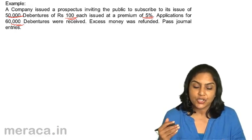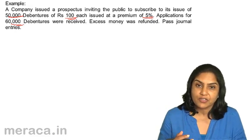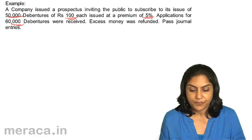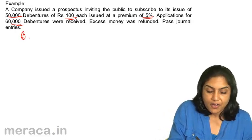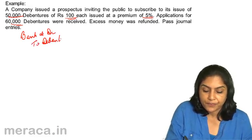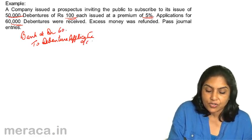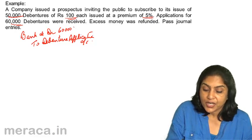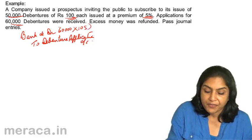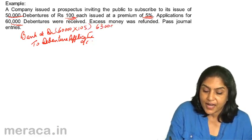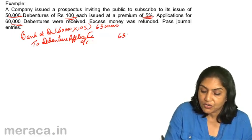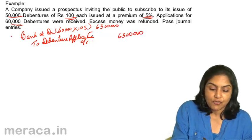When the applications are gone through and debentures are allotted, we transfer the application money to debentures account. The first entry is bank account debit to debenture application account. The amount is 60,000 debentures into Rs.105, that is 63 lakhs. To debenture application account is 63 lakhs. This is your first entry.